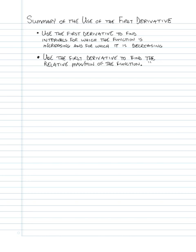Before we talk more about the second derivative, I want to go over a summary of the use of the first derivative. The first thing to recall is that one way we use the first derivative is to find the intervals for which the function is increasing and for which it is decreasing. When the first derivative is positive, the original function is increasing, and when the first derivative is negative, the original function is decreasing.